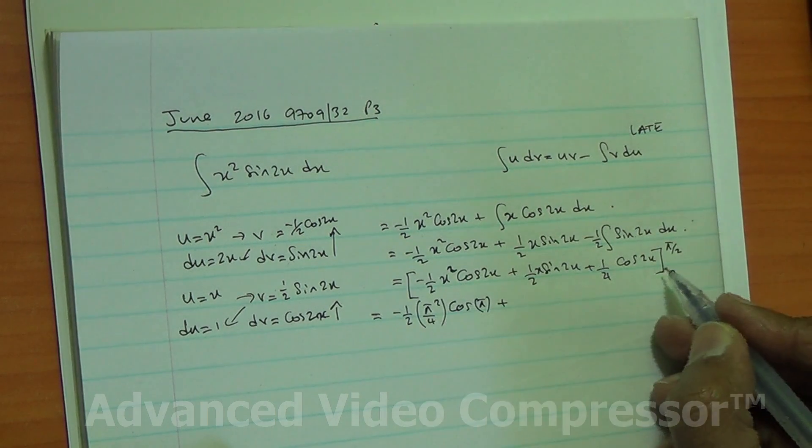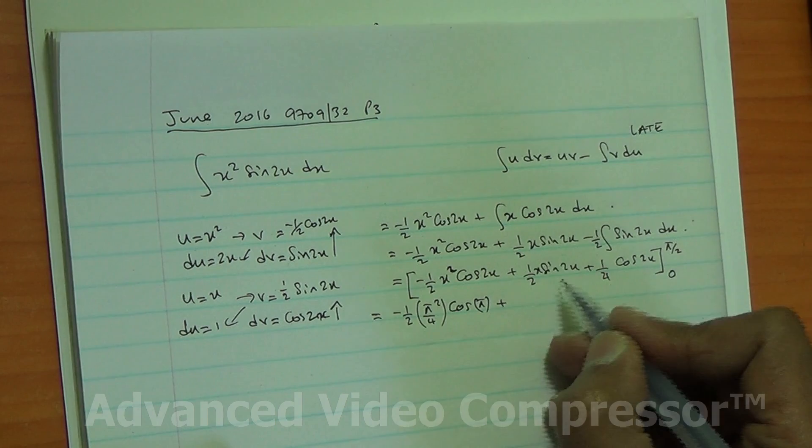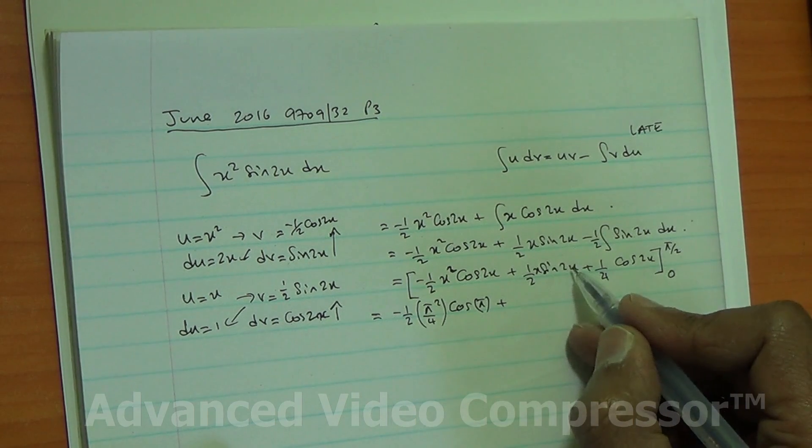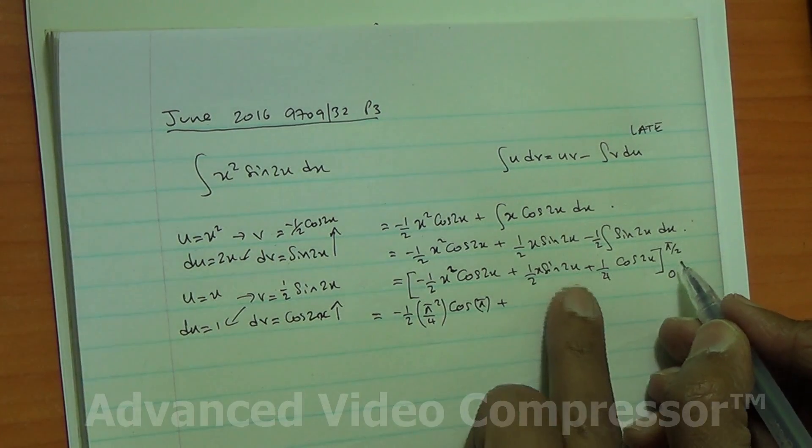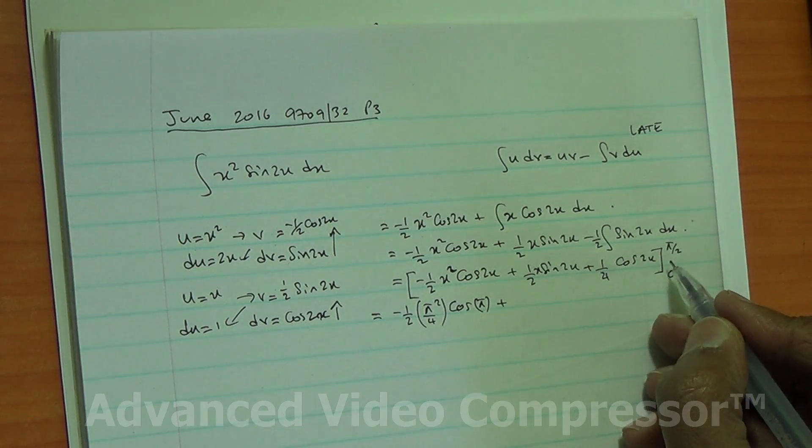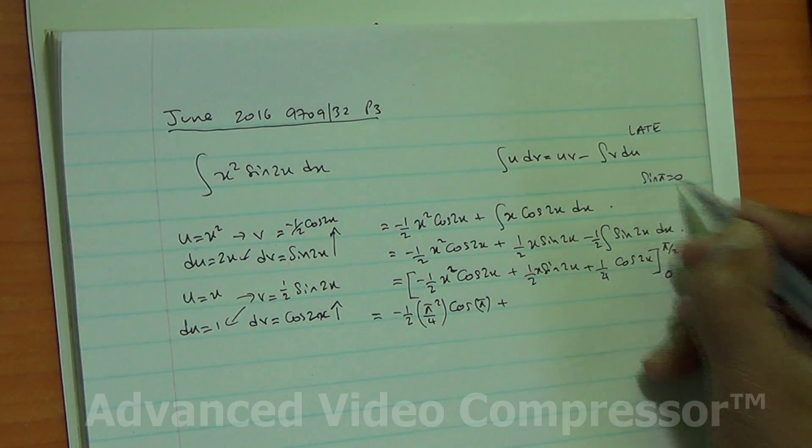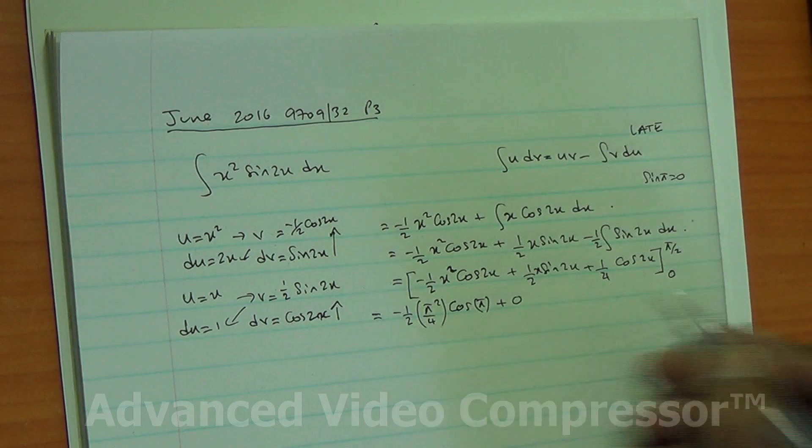Plus half times x, and then sin of 2x. What is sin of 2x? 2 times pi upon 2 is sin of pi, and we know that sin of pi is equal to 0, so this is going to become 0.